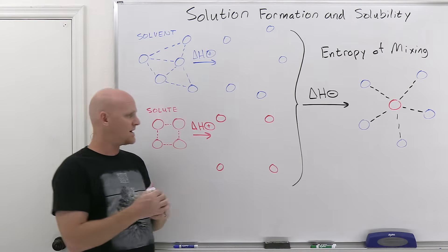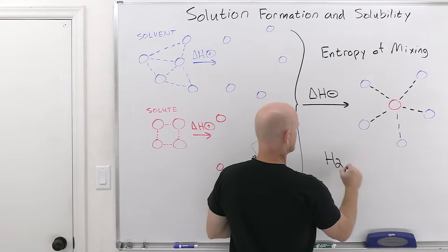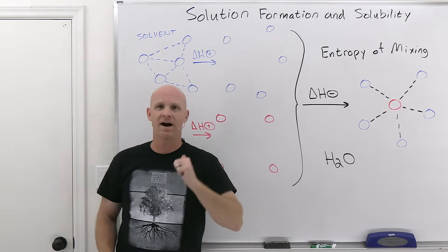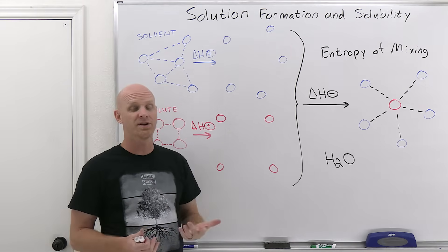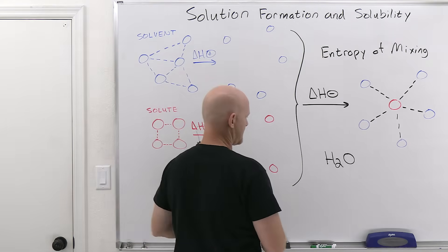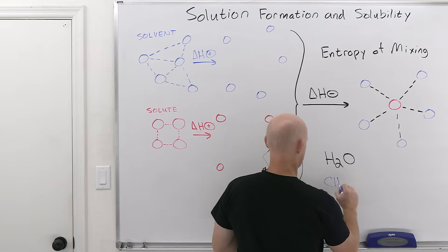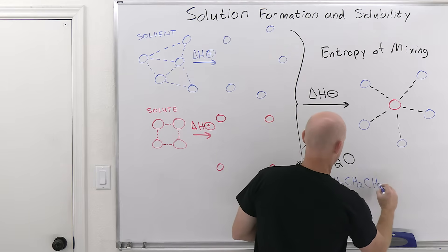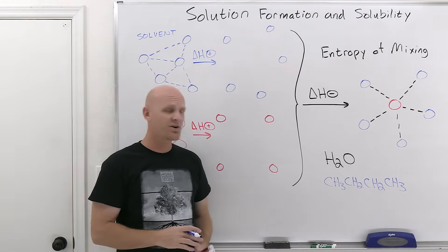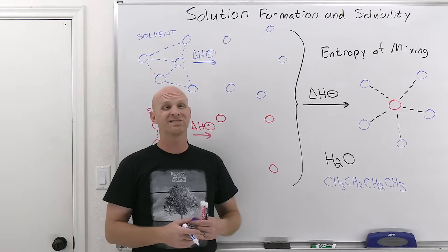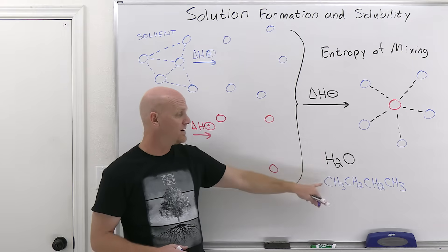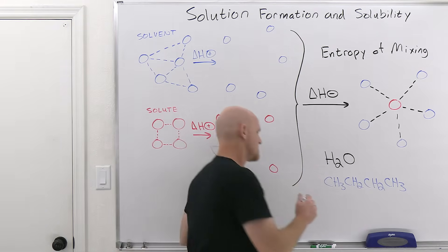You might be given a question asking which of the following would be most soluble in water. You've got to know that water is really polar and is capable of hydrogen bonding, so if you want something very soluble in it, you want something with lots of hydrogen bonding that's very polar. If we consider butane — CH3CH2CH2CH3 — it's just a hydrocarbon with no electronegative atoms whatsoever, a nonpolar molecule. These are not going to mix well at all because you're trying to mix something polar with something nonpolar.